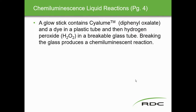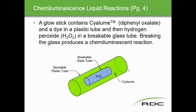A glow stick is a good analogy — it contains diphenyl oxalate, a dye, a plastic tube, and hydrogen peroxide in a breakable glass vial. Breaking the glass produces a chemiluminescent reaction. That glowing light emitted is chemiluminescence, and this is exactly what our analyzer is going to measure.